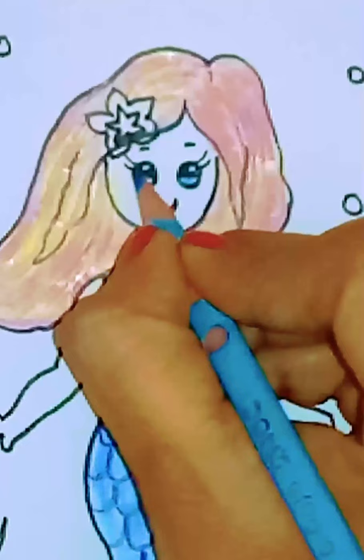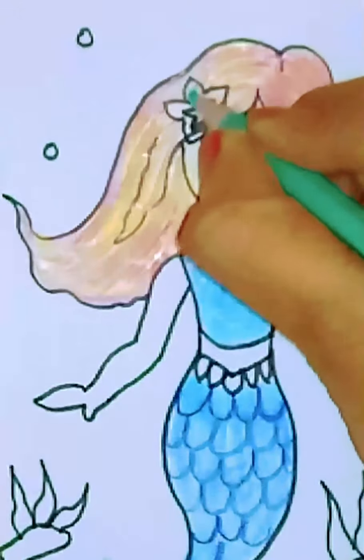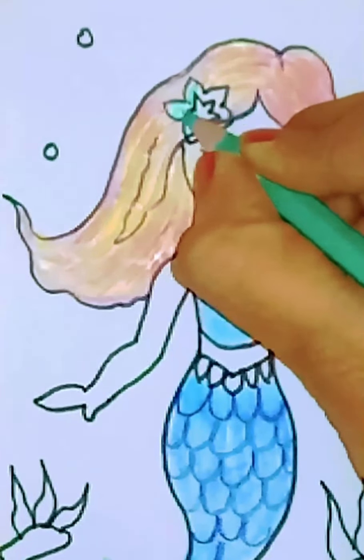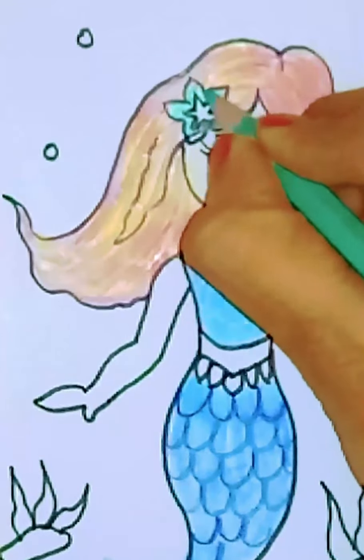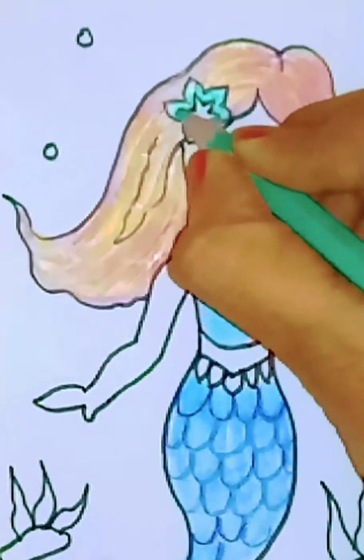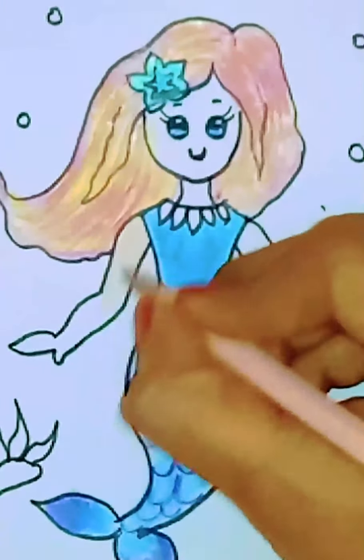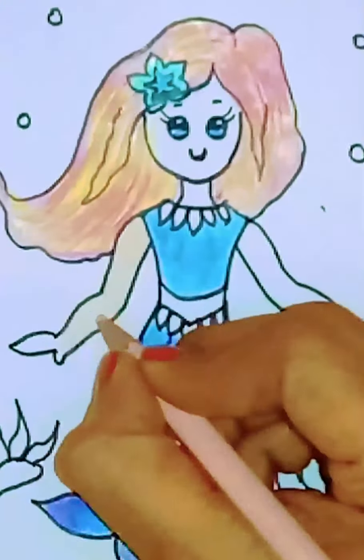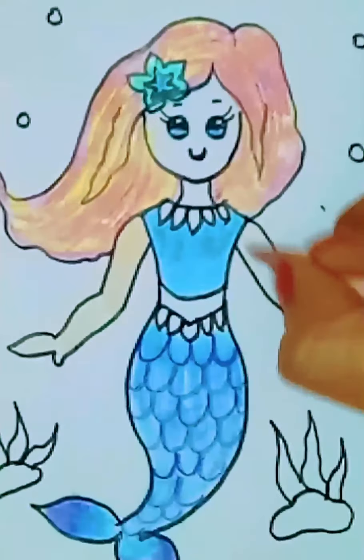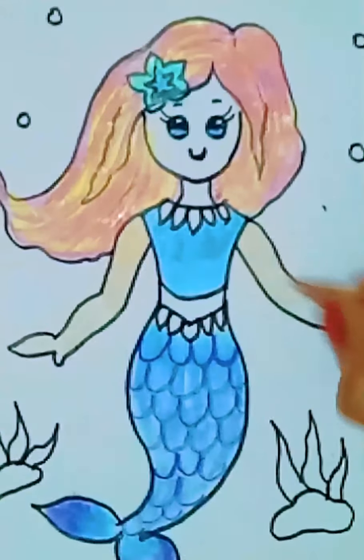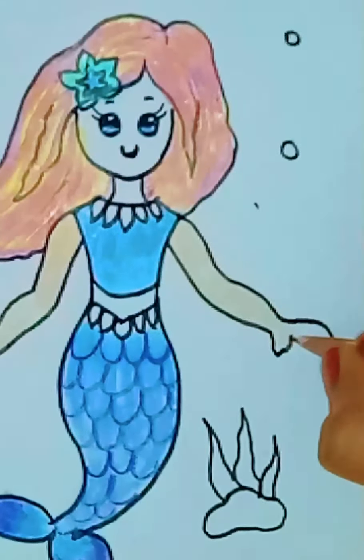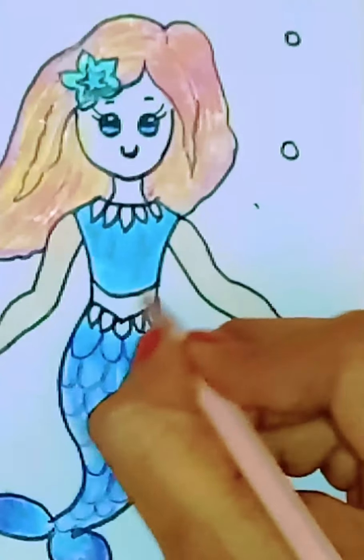Now let me color her eyes with light blue and flower with green and blue shade. Now let us color her complete body with peach color, that is skin color. Her hands, her stomach, face and neck.